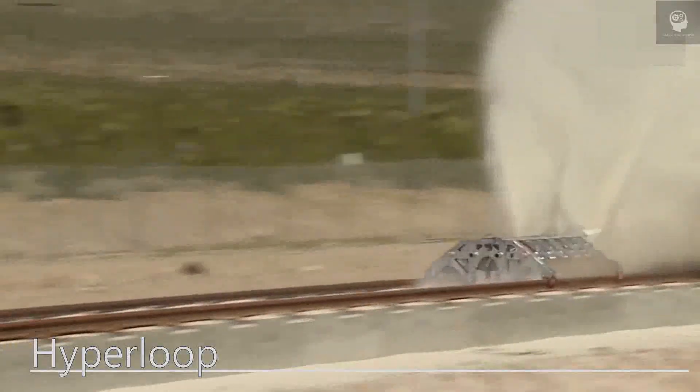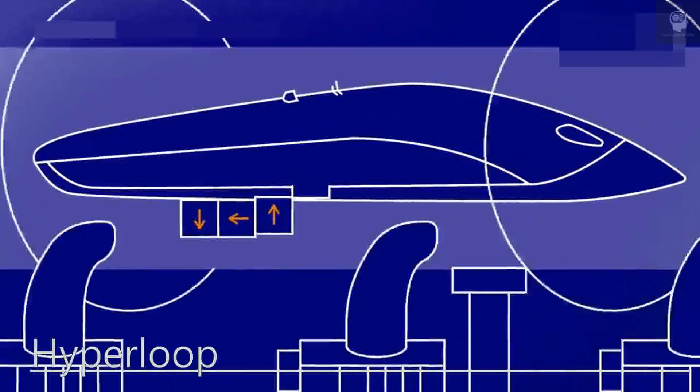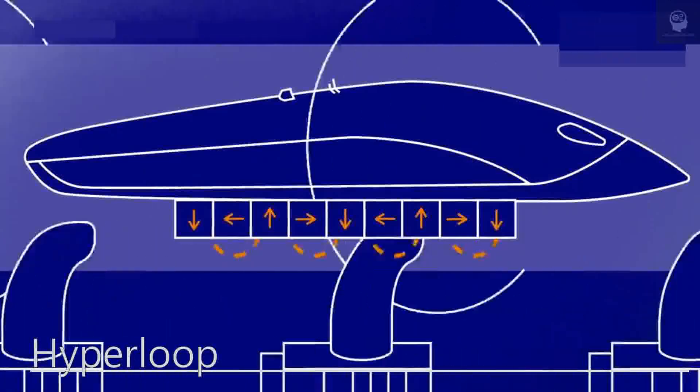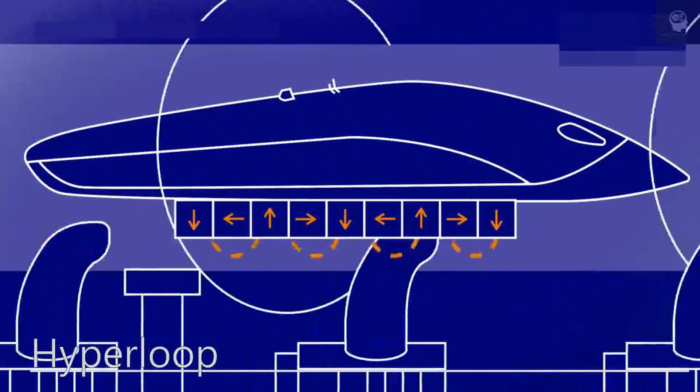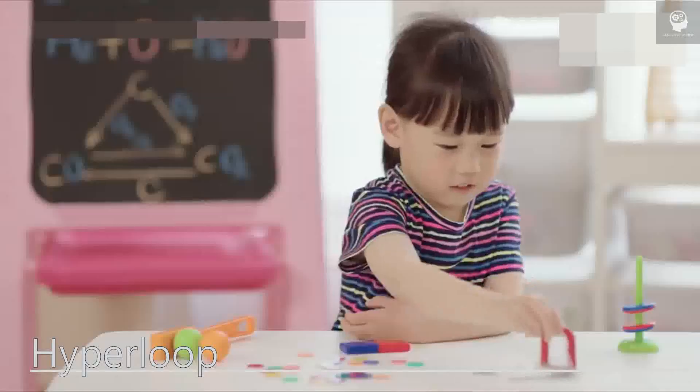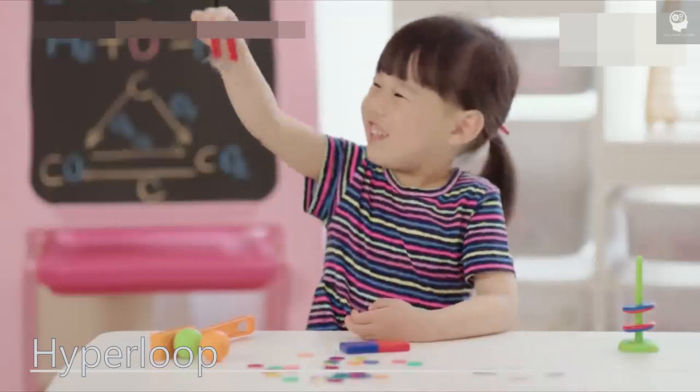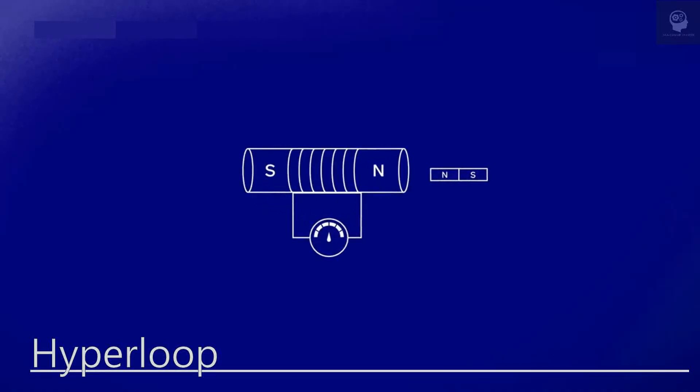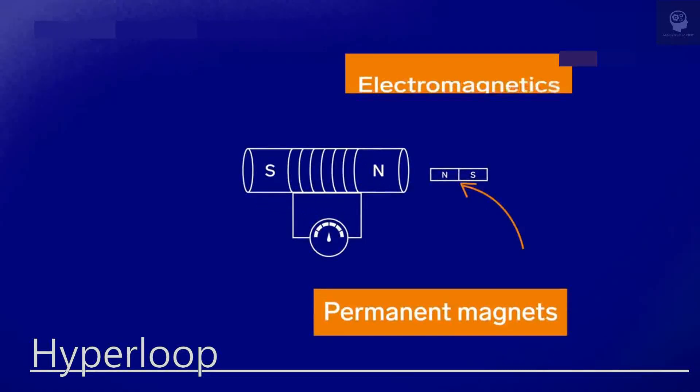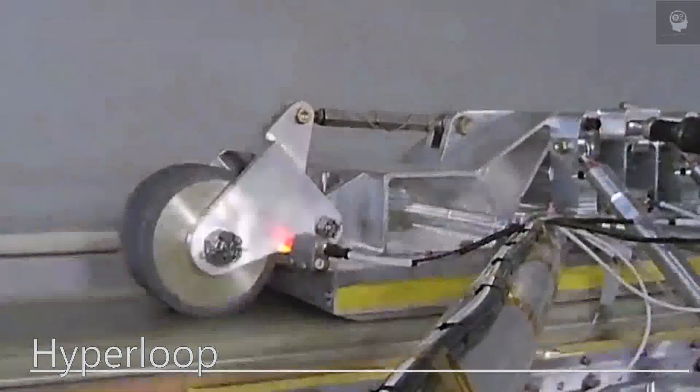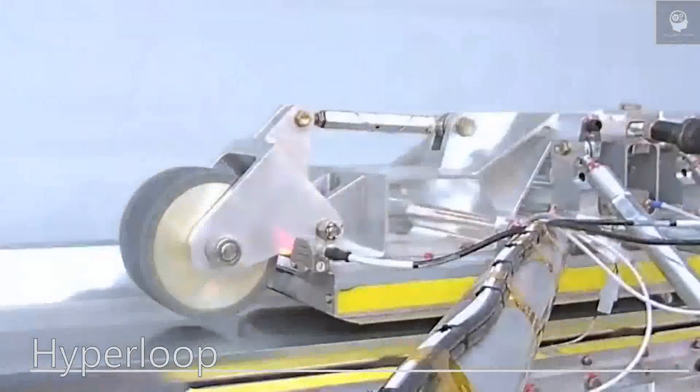Boosted tourism and trade through hyperloop technology could increase the speed and efficiency of transporting goods and people, which could boost tourism and trade between cities and countries. For example, a hyperloop between Amsterdam and Frankfurt could make it possible to travel between the two cities in just 53 minutes, increasing business opportunities and tourism.